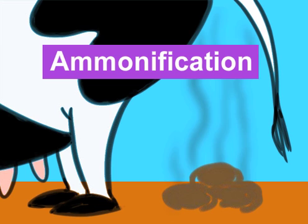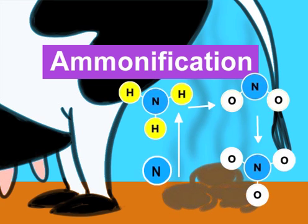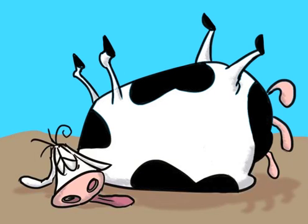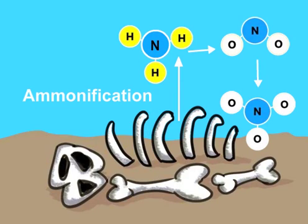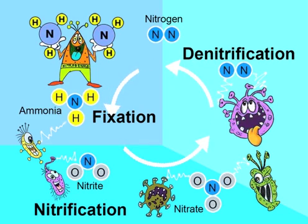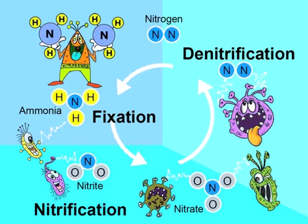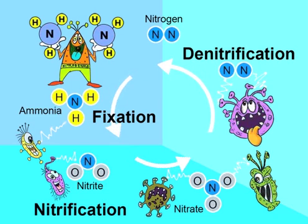Ammonification. When an animal excretes waste, nitrogen converts to ammonia. And when a plant or animal dies, the organic nitrogen also converts to ammonia. Ammonification stinks! But it is still a very important part of the life-giving process and the never-ending cycle that we call the Nitrogen Cycle.